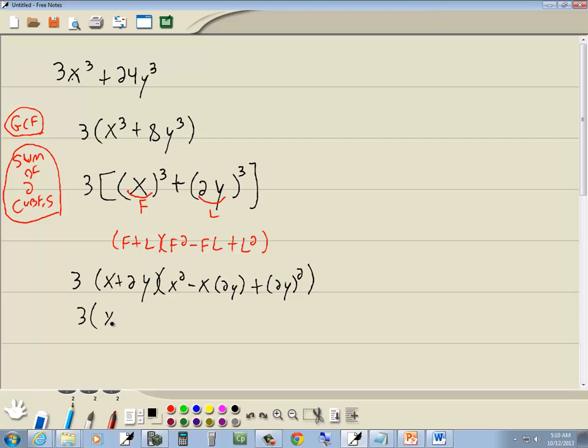Which gives us 3 times x plus 2y times x squared minus 2xy, and 2y times 2y gives us 4y squared. And that'd be your answer.